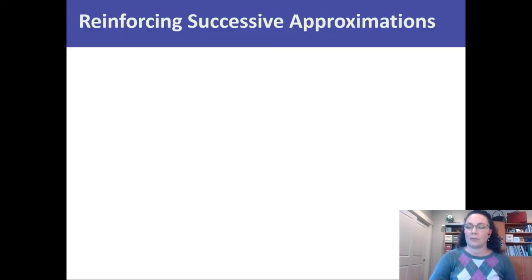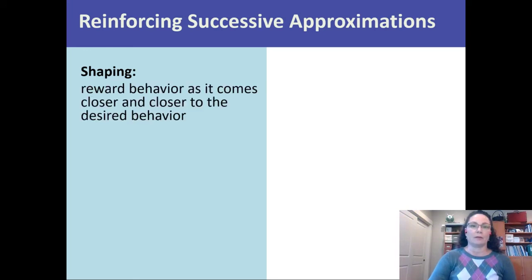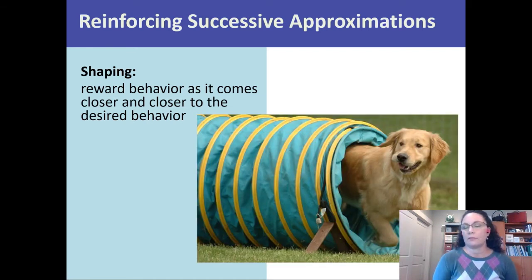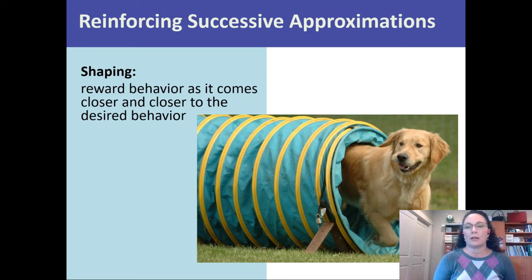One thing we can do when trying to teach our learner what we want is reinforce them for behaviors that are close to what we want — we call those successive approximations, or shaping. We reward the behavior as it comes closer and closer to the desired behavior. If you want your dog to run agility courses, one of the big stumbling blocks is running through the tunnel. Especially a dog like this one probably really didn't want to go into the tunnel the first time.